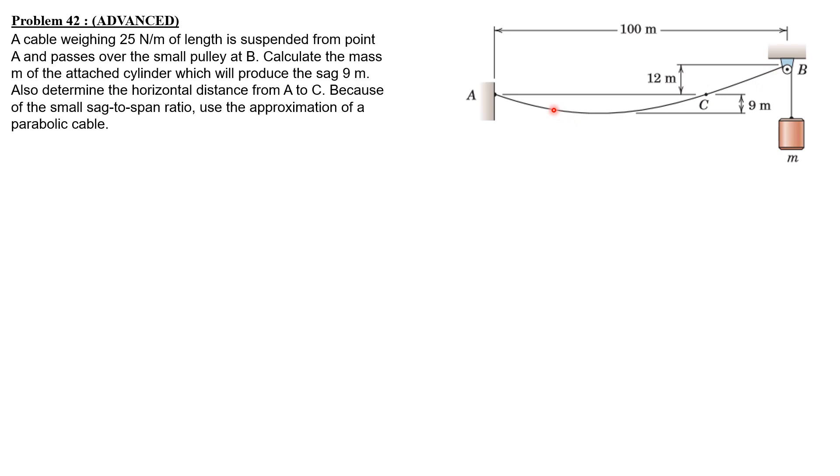We can approximate this as a parabolic cable because the sag to span ratio is small. When the sag to span ratio is small, we can treat the cable as parabolic, but the strict definition of this cable should be a catenary cable.